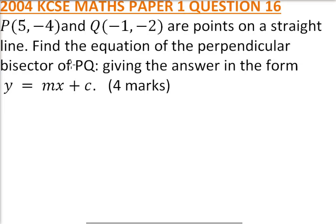2004 KCSE Maths Paper 1 Question 16. You are told P has coordinates (5, -4) and Q has coordinates (-1, -2), which are points on a straight line. Find the equation of the perpendicular bisector of PQ, giving the answer in the form y = mx + c.